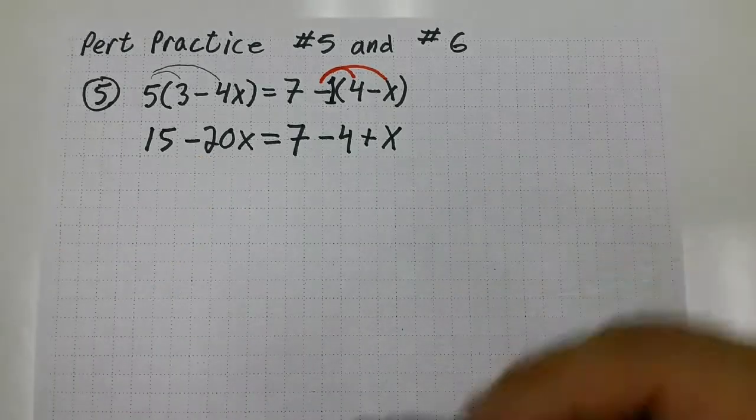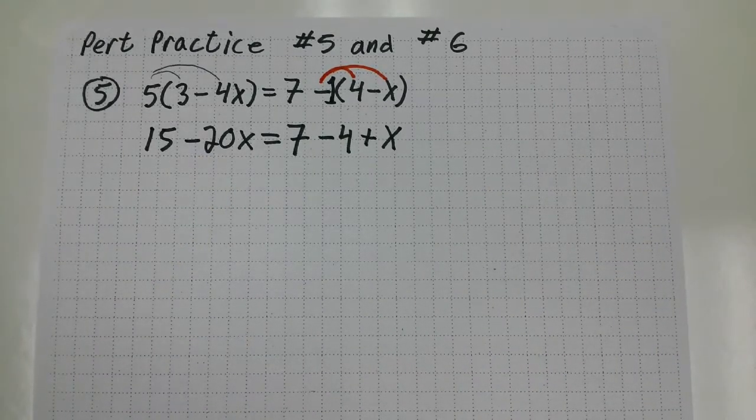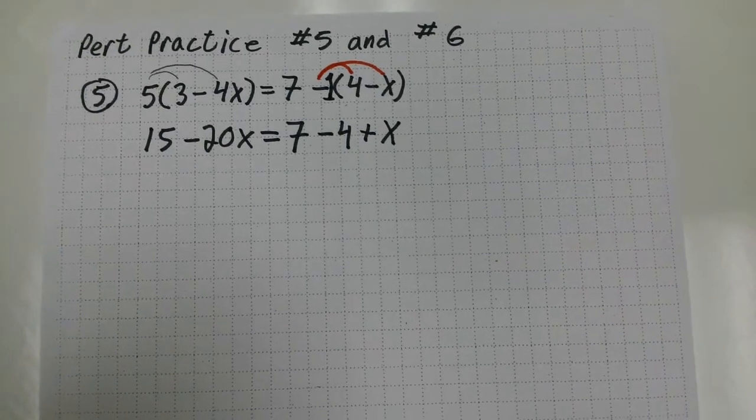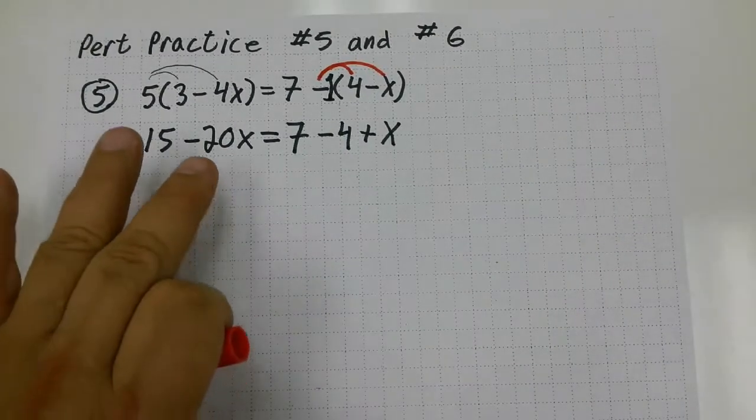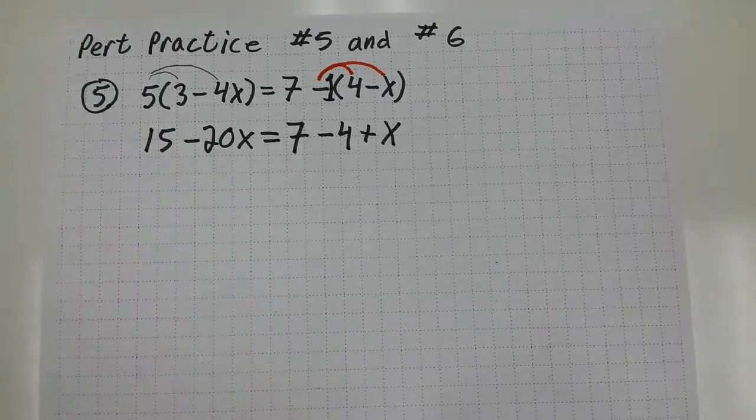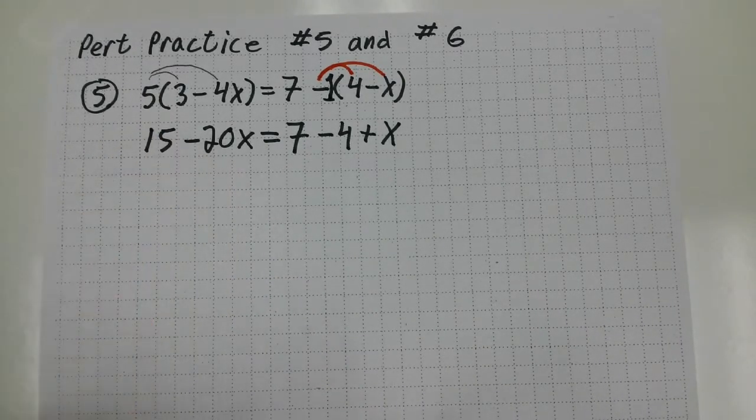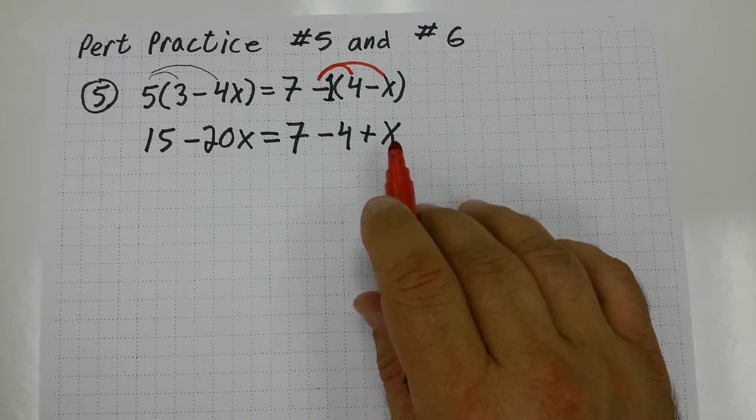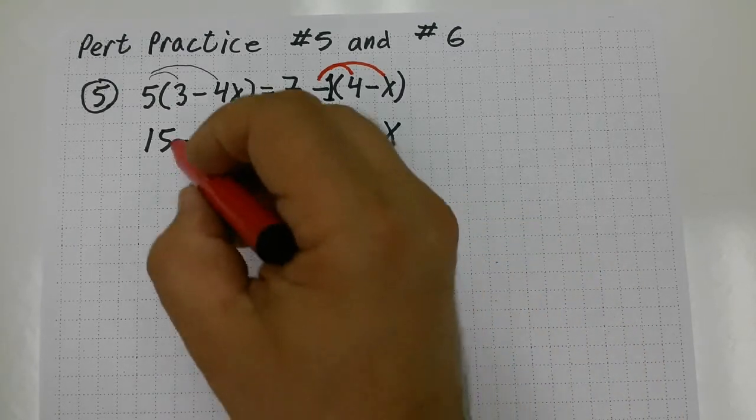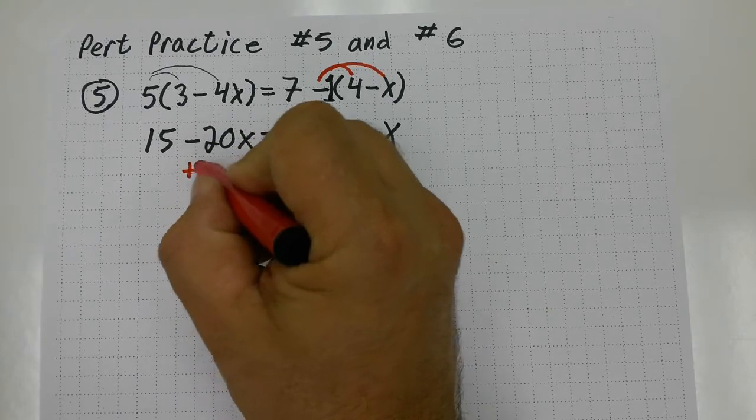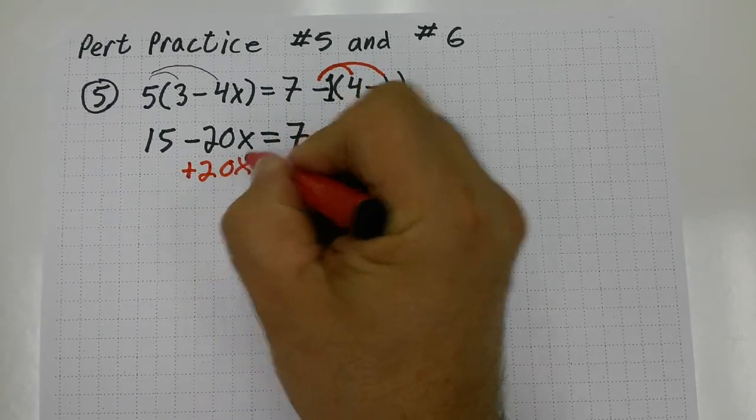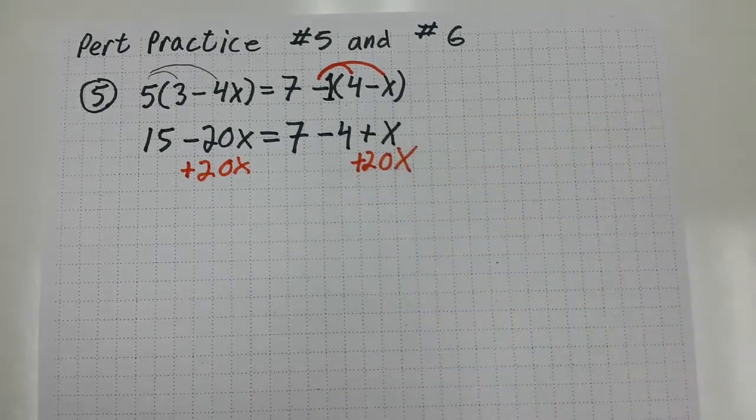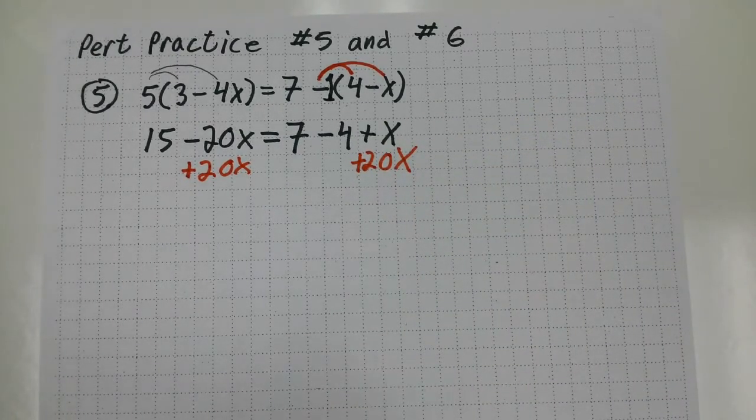Now I have an equation with variables on opposite sides. One of the things I prefer to do, it just makes it a little bit more convenient in my perspective, is to do the opposite of the smaller variable. Negative 20 is a lot smaller than positive 1x. So I'm going to do the opposite of negative 20x. I'm going to add 20x to both sides. Once I add 20x to both sides, that will get me a variable on only one side.